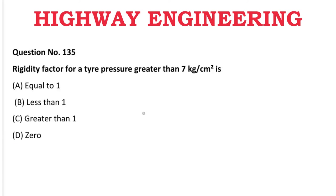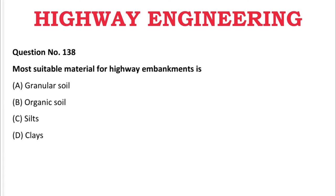Next question: Rigidity factor for tire pressure greater than 7 kg/cm² is — A: equal to 1, B: less than 1, C: greater than 1, D: 0. The correct answer is B, less than 1.